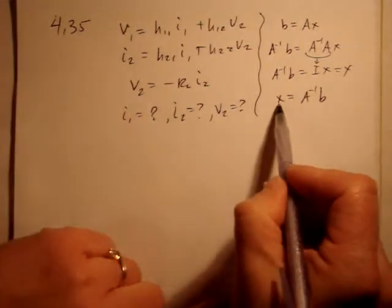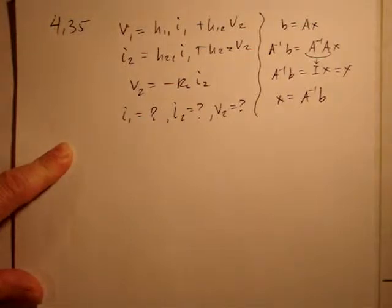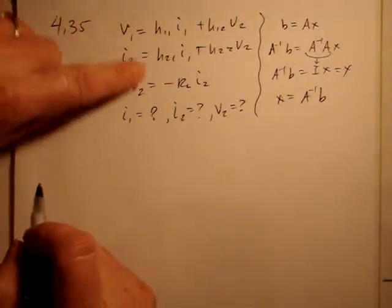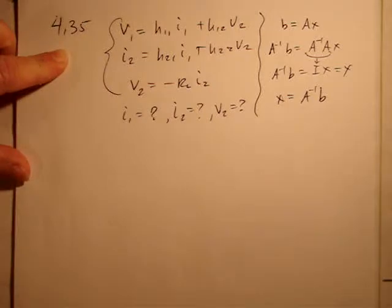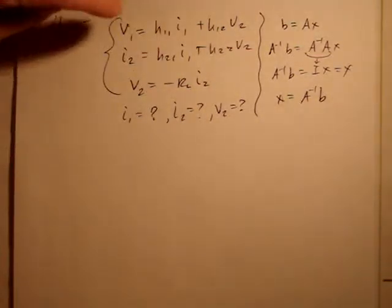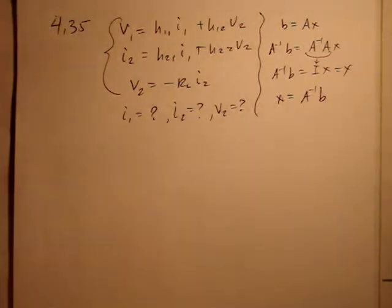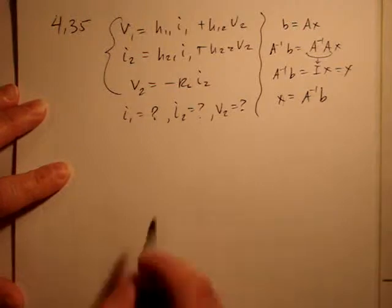So we have to write our equation so that X is the variables we're looking for: I1, I2, V2. So we'll rearrange these three equations with I1, I2, and V2 on the right-hand side. And then the other variables, which is the only one, V1, and we're assuming that's known, on the other side. So let's work on rewriting this.